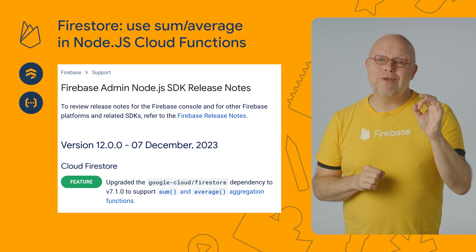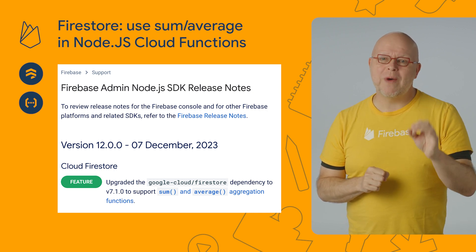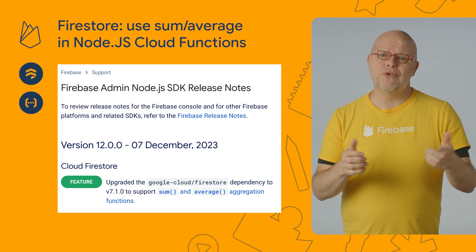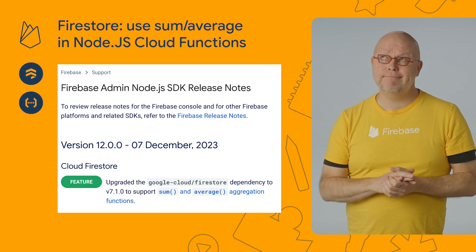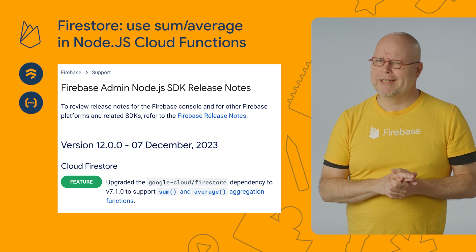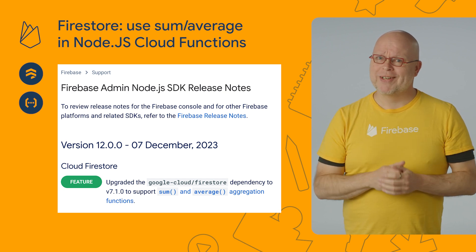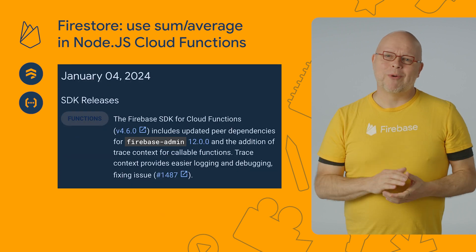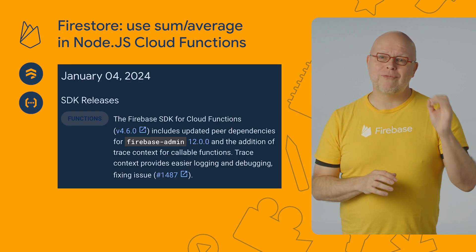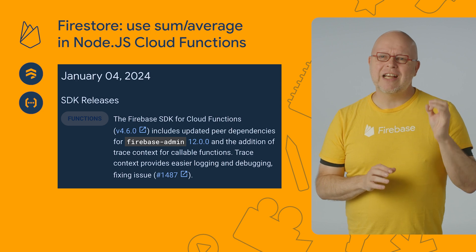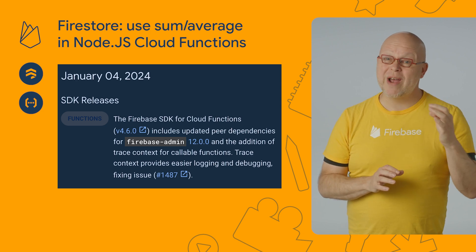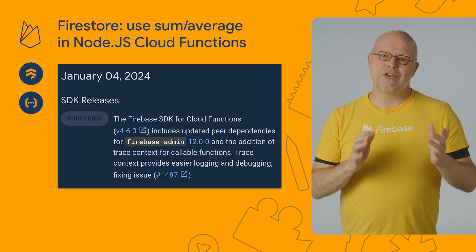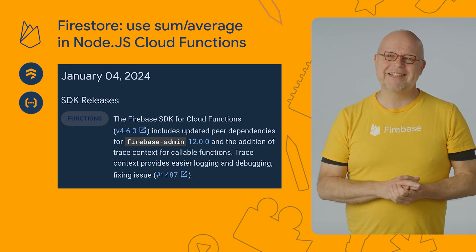Last month, the sum and average operators were added to version 12 of our admin SDK for Node.js. Many of you tried to use these new Firestore operators in your Cloud Functions, and it didn't work there yet. Thanks to your reports, we've rolled out version 4.6 of the Firebase SDK for Cloud Functions, which includes the required peer dependency for the new admin SDK version. So update to the latest Firebase functions to use the sum and average operators in your Cloud Functions.